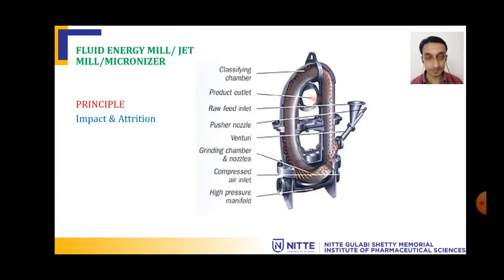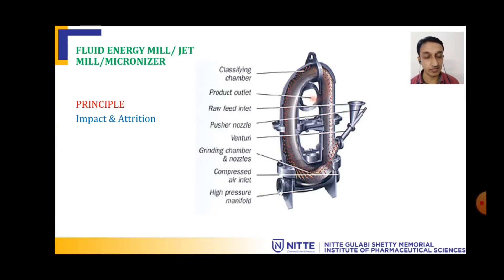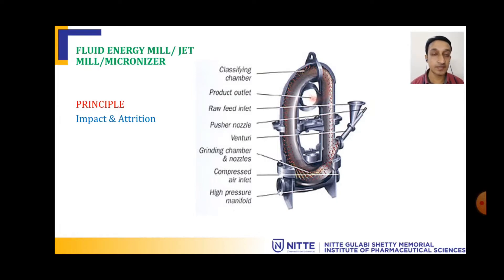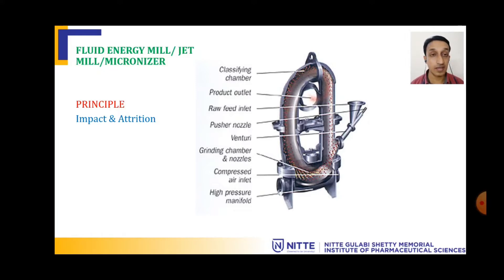Let us discuss advanced size reduction equipment called a fluid energy mill, also known as a jet mill or micronizer. This is a peculiar machine with a unique design. In a fluid energy mill, particles are size reduced by two major mechanisms: impact and attrition. Let us see how impact and attrition take place within a fluid energy mill by looking at a diagram.